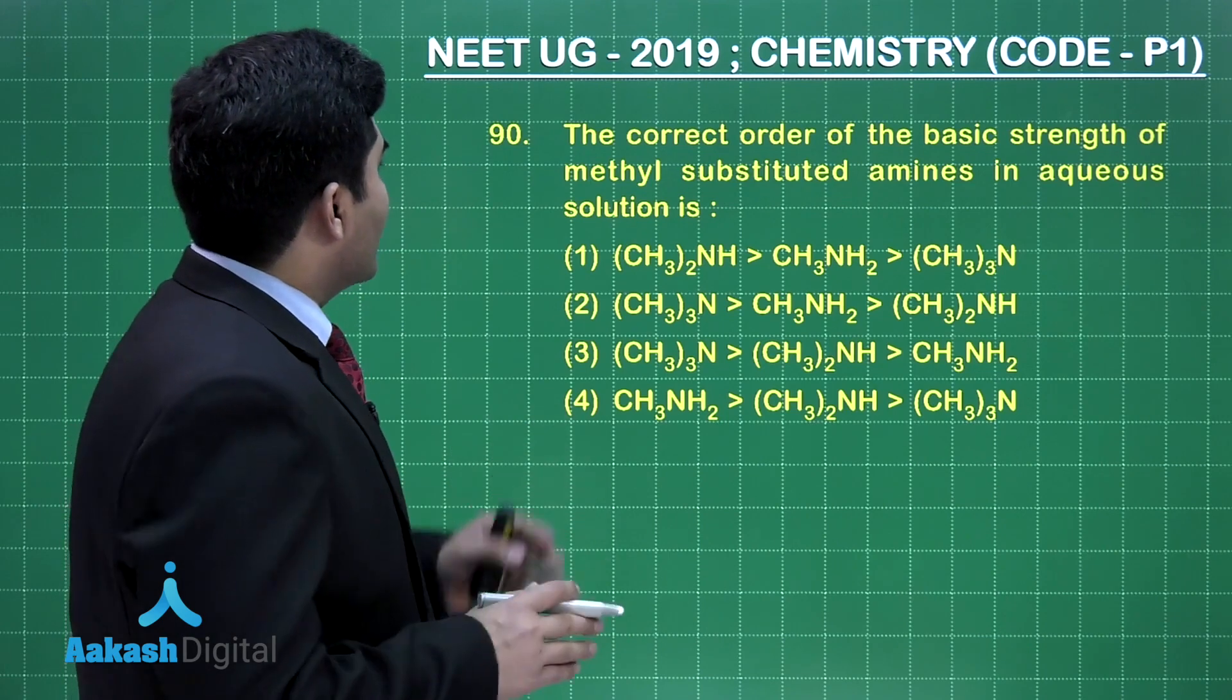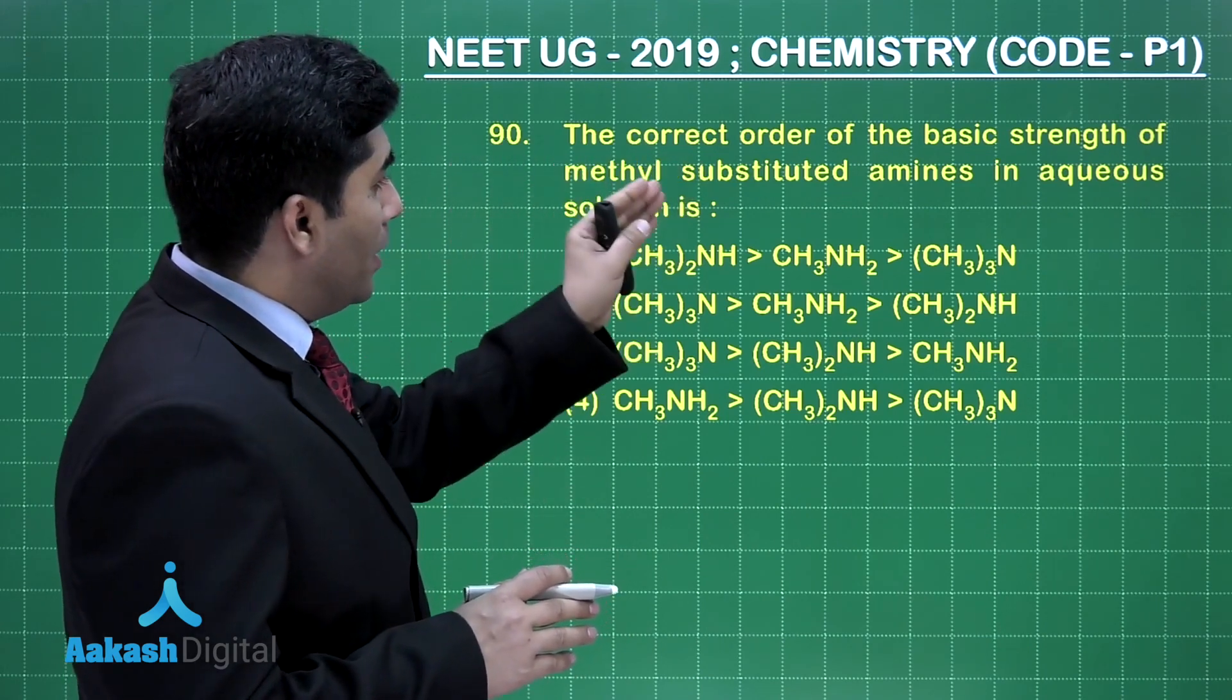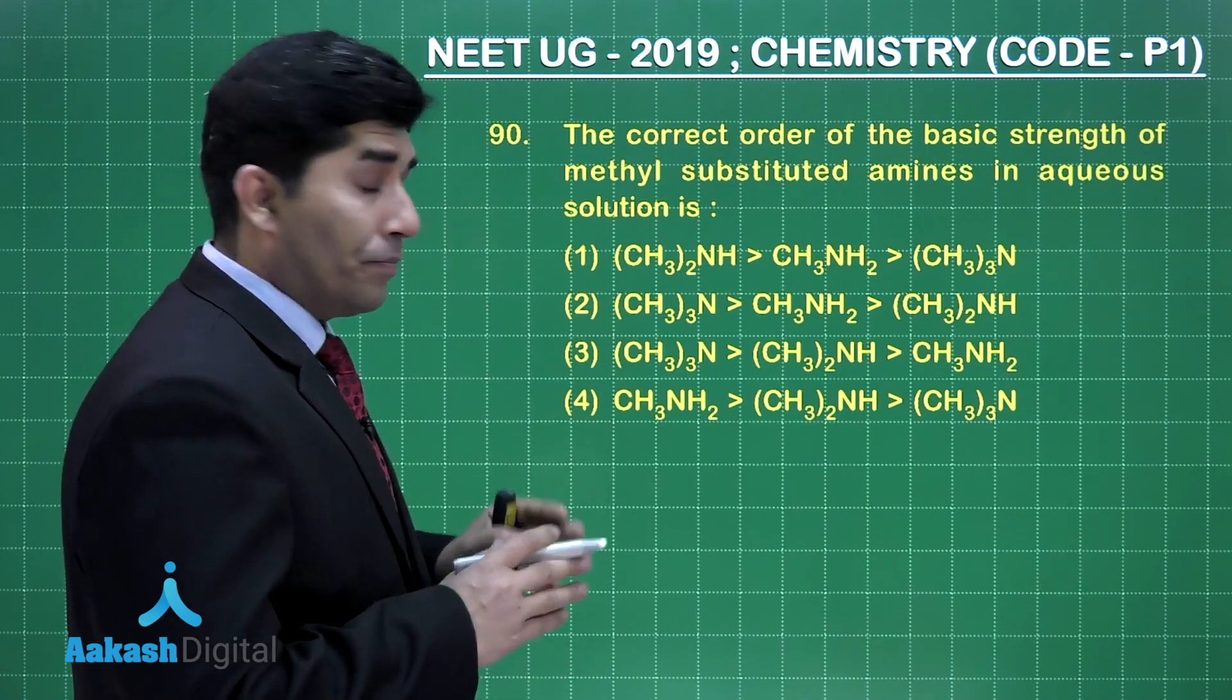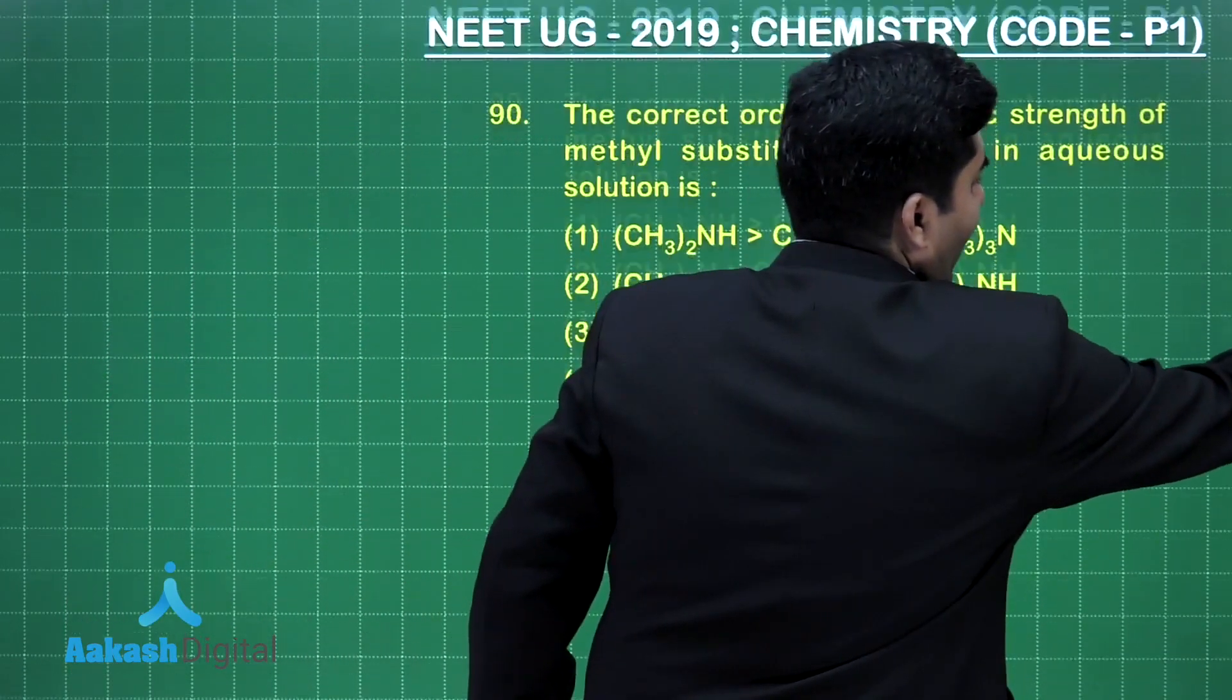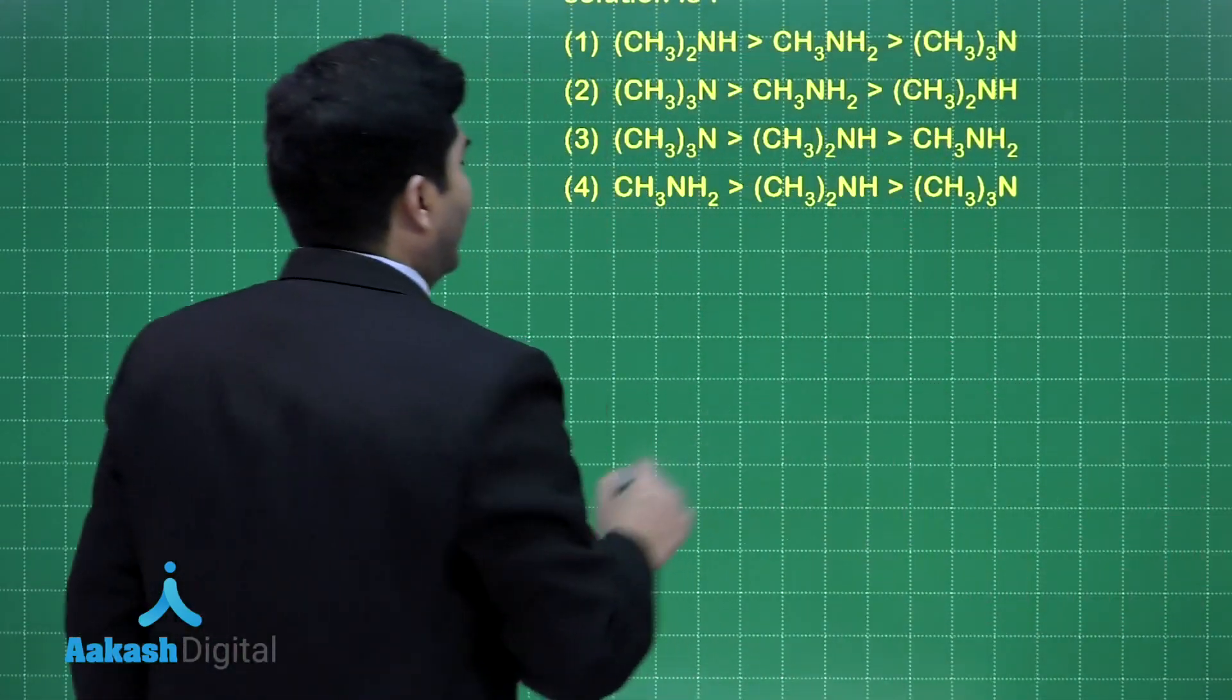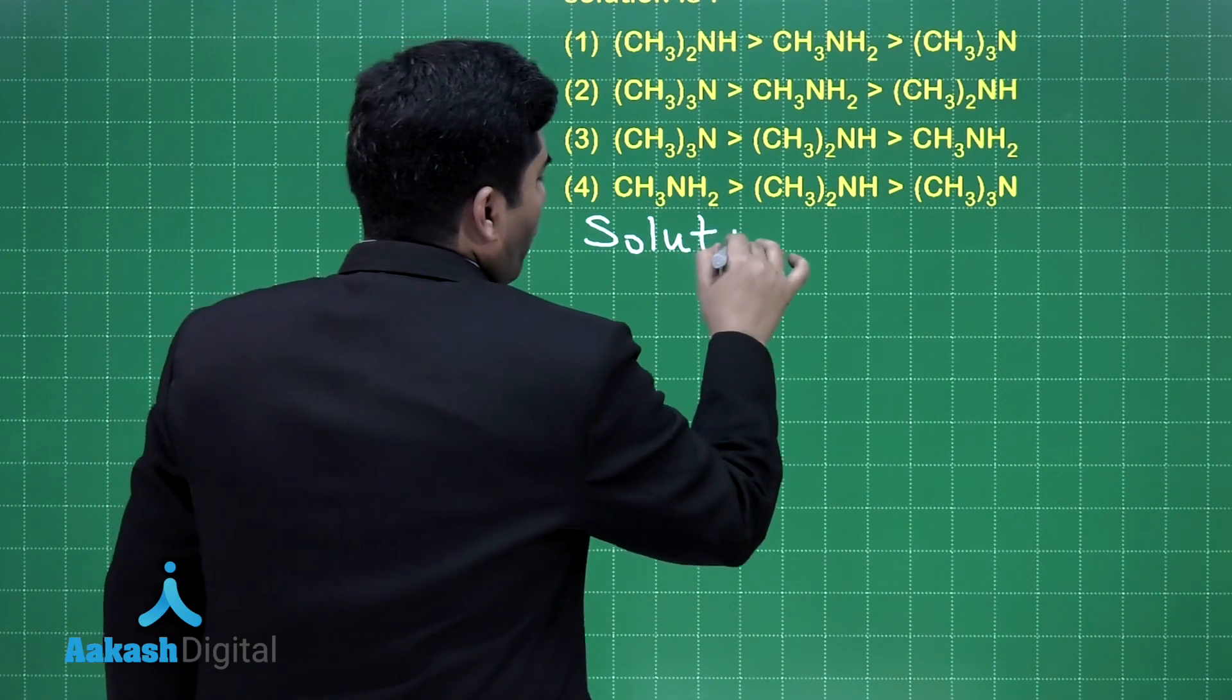Now, in this question, he is asking, the correct order of basic strength of methyl substituted amine in the aqueous solution is. Now, it is given in NCERT that if we want to find out the basic character, we have to know the value of PKB.